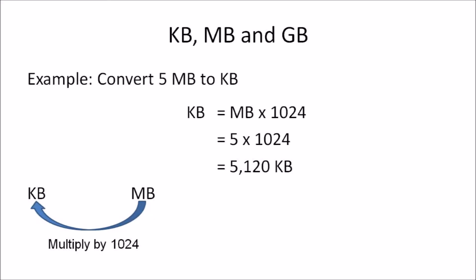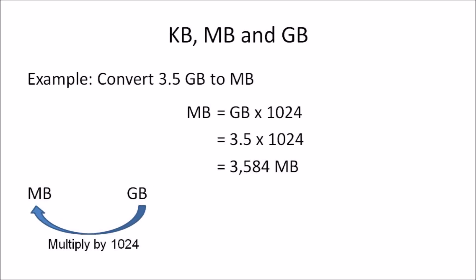Example 4: Convert 5 megabytes to kilobytes. We're going from a larger unit to a smaller unit, so we multiply. The formula is: kilobytes = megabytes × 1024. Substituting: 5 × 1024 = 5,120 kilobytes. Notice the amount increases because we're converting to a smaller unit.